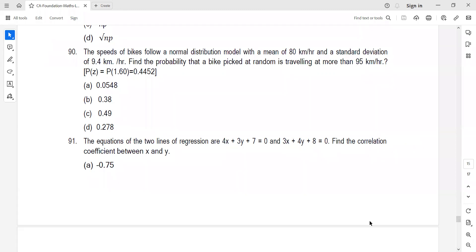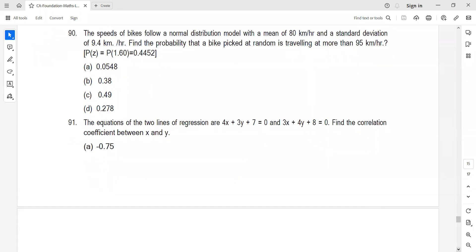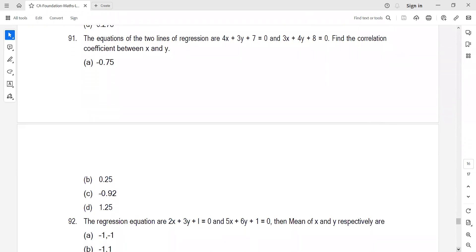Equations of two regression lines are given, find the correlation coefficient. We've dealt with this recently in revision lectures. Take one as X on Y, one as Y on X. Use the property that bYX into bXY should be less than one. This is straightforward from 12th standard.